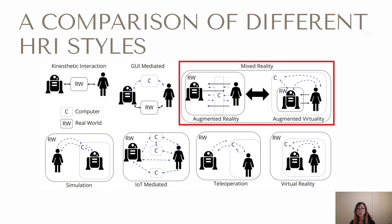Mixed reality enables the fusion of digital and real-world content. On the left-hand side of the spectrum of mixed reality is augmented reality, where digital content is superimposed over the real-world environment to enhance the interaction between human and robot. On the other hand, augmented virtuality is where real-world objects are instead merged into the virtual world. A possible augmented virtuality scenario, for instance, is one involving a real physical robot in a virtual environment. In this work, we focus on AR and HRI, where we unfold key interaction styles that can take place in that space.